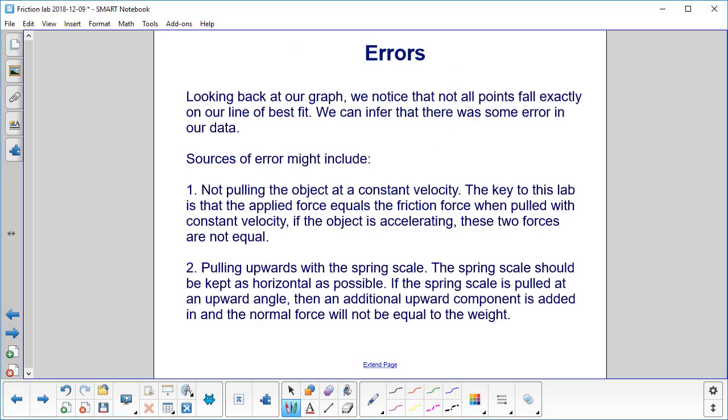You may have noticed that not all of the data points fell exactly on the line of best fit. That infers that there was some error in our data. The sources of error might include not pulling the object at a constant velocity. That's the key to the lab. The applied force equals the friction force when pulled with constant velocity. If the object is accelerating, these two forces are not equal.